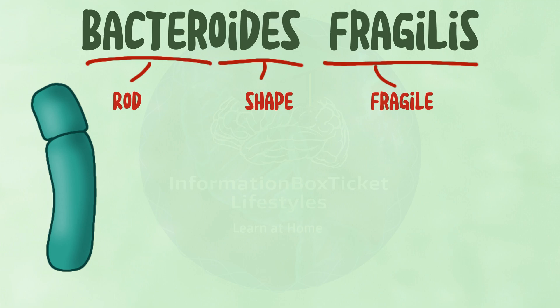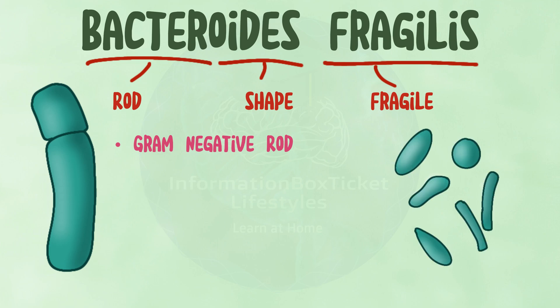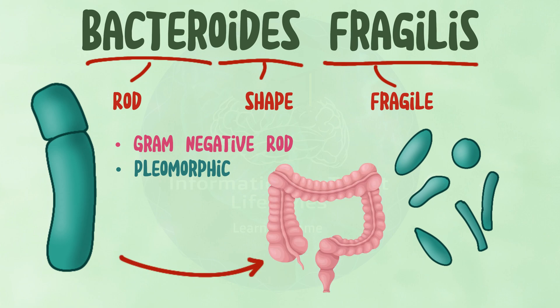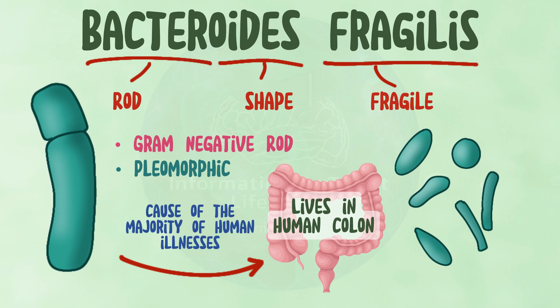Bacteroides fragilis is a gram-negative, rod-shaped bacterium. Although it is typically thought to be rod-shaped, it can also be sphere-shaped, making it a pleomorphic bacterium. Bacteroides fragilis lives in the human colon and is the cause of the majority of human illnesses among all Bacteroides species.